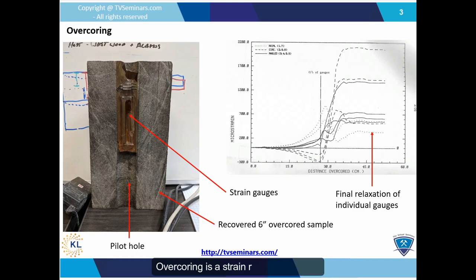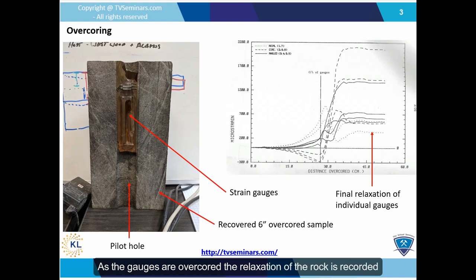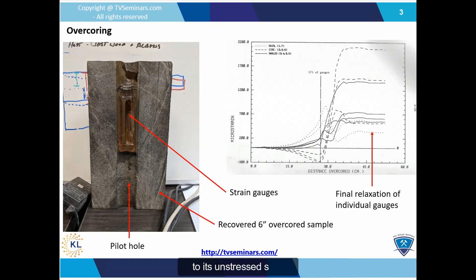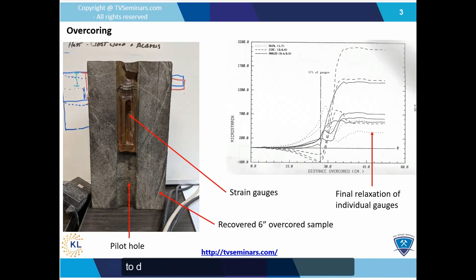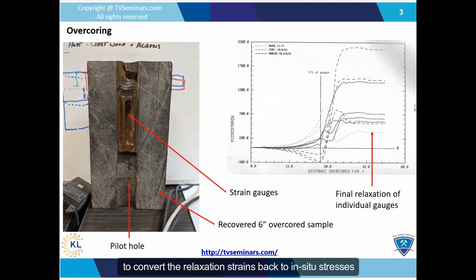Over-coring is a strain recovery method. Strain gauges are glued into a pilot hole in the rock, which is then over-cored using a larger diamond drill bit. As the gauges are over-cored, the relaxation of the rock is recorded as it relaxes from its in-situ compressed state to its unstressed state. Once the sample is recovered, it is compressed in a laboratory to determine its Young's modulus and Poisson's ratio, and those values are then used to convert the relaxation strains back to in-situ stresses.